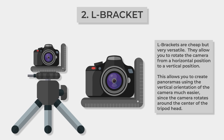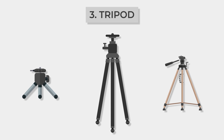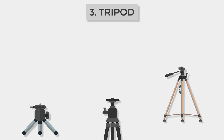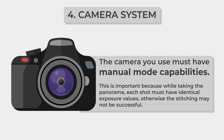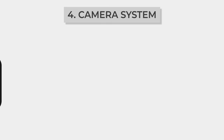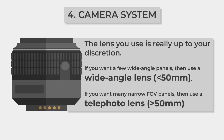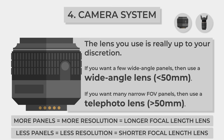Along with the nodal slide, an L bracket will let you easily rotate your camera between horizontal and vertical positions, and you can find them relatively cheap. A sturdy tripod with a rotatable head will also be necessary to effortlessly pan the camera. If desired, a special rotary base with degree markings and locking knobs can be used to precisely rotate your camera assembly. As for the camera and lens combination, any camera with a manual mode will suffice. For the lens, it comes down to personal preference — a wide angle lens like a 16–35mm may work for stitching a few images, while a longer focal length telephoto lens will give you more resolution through more panels.